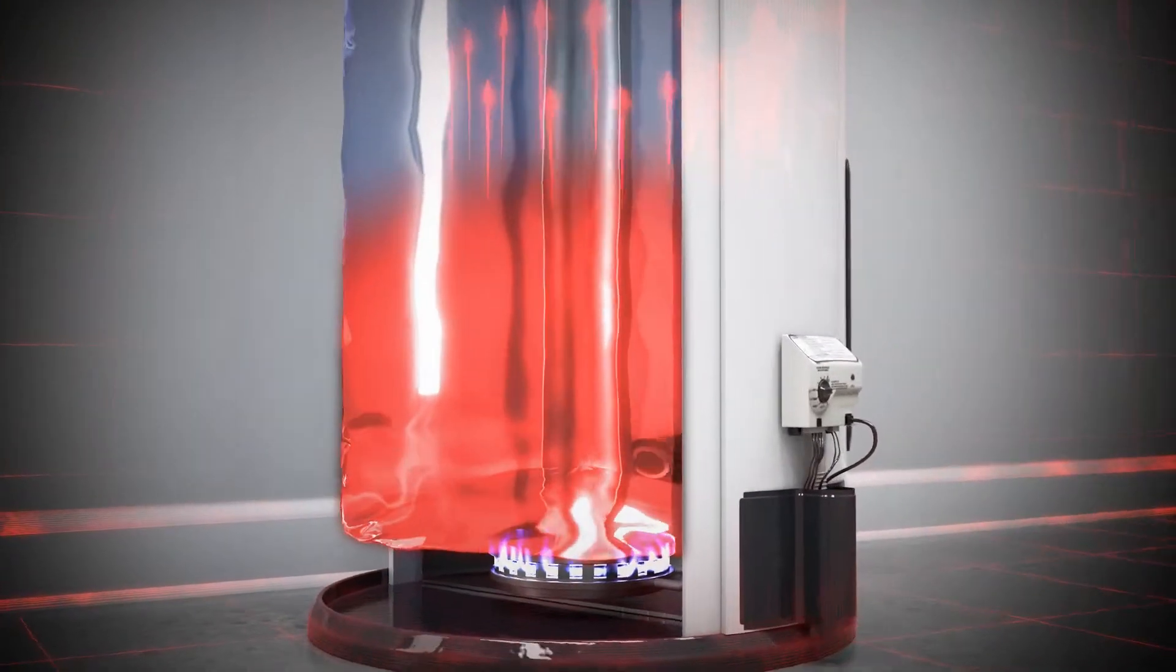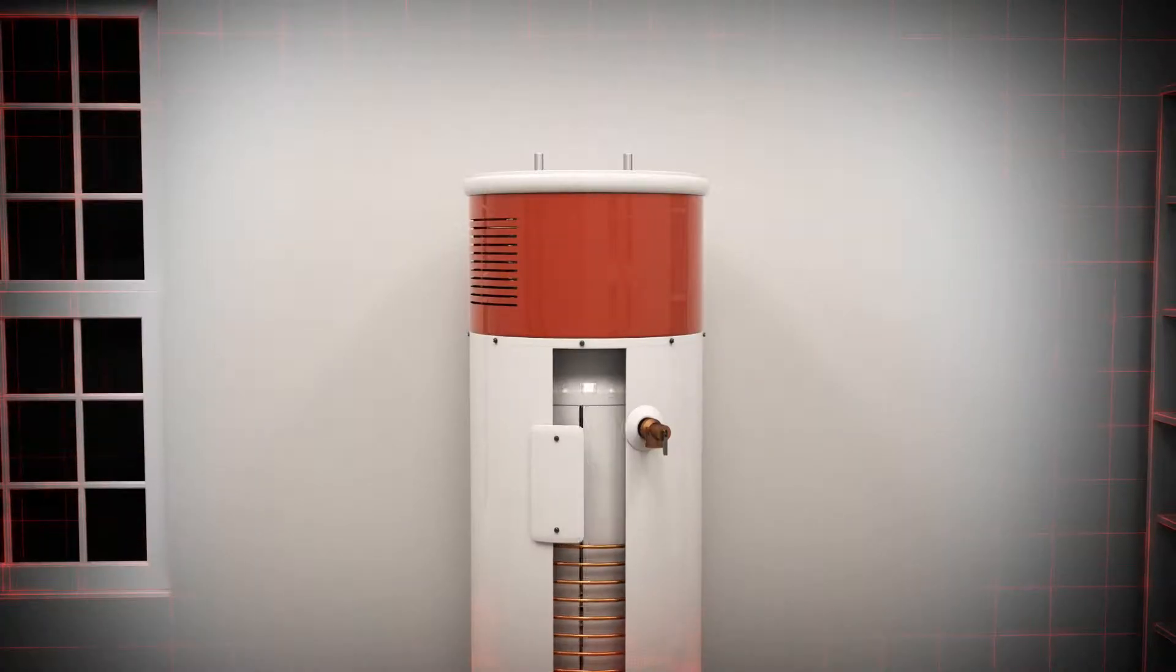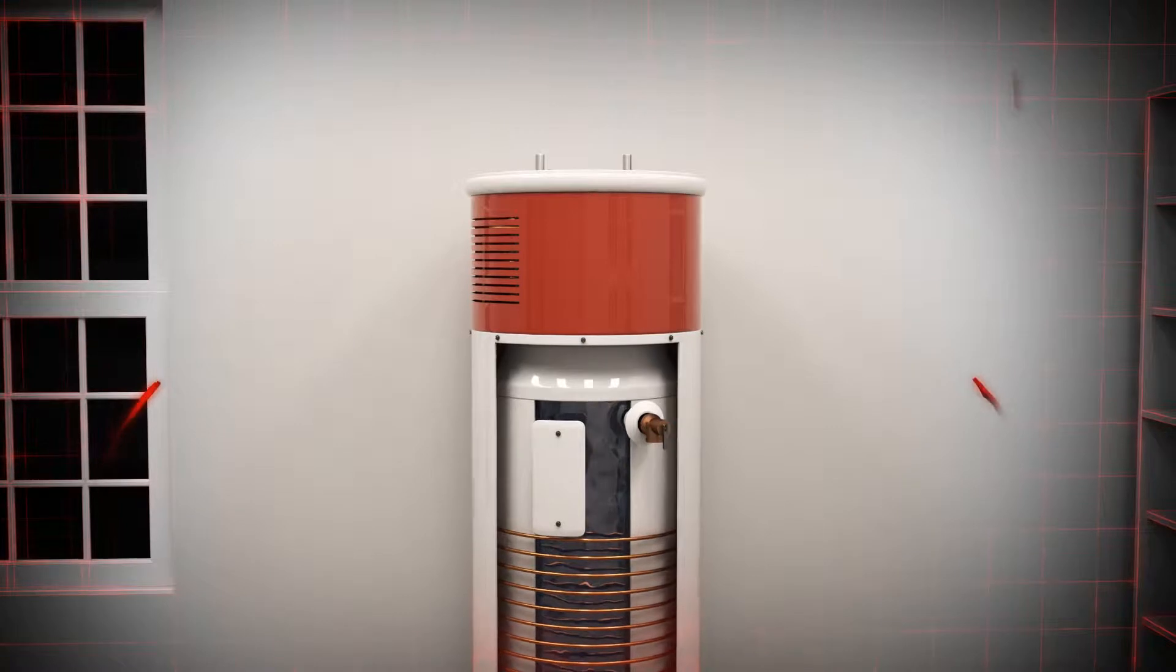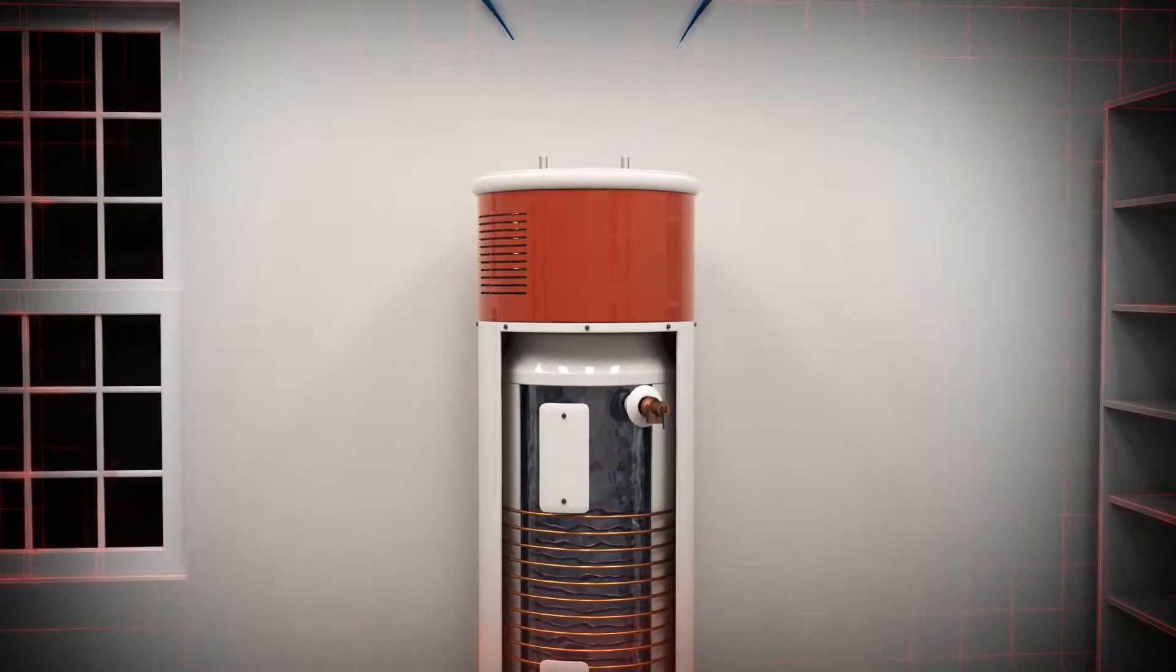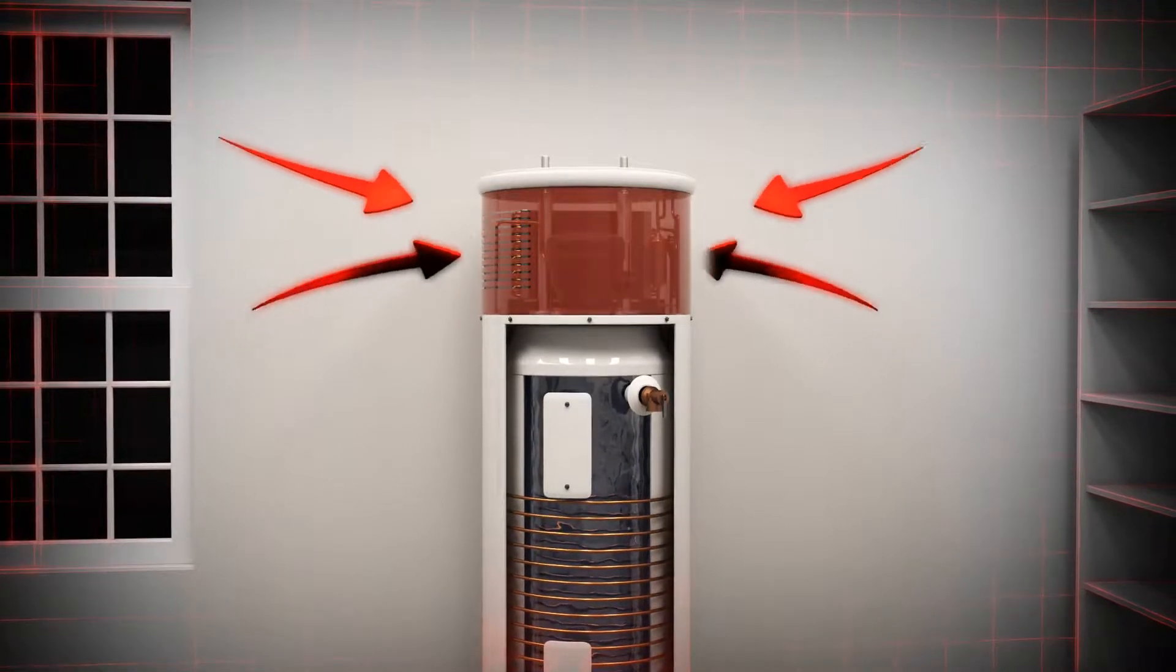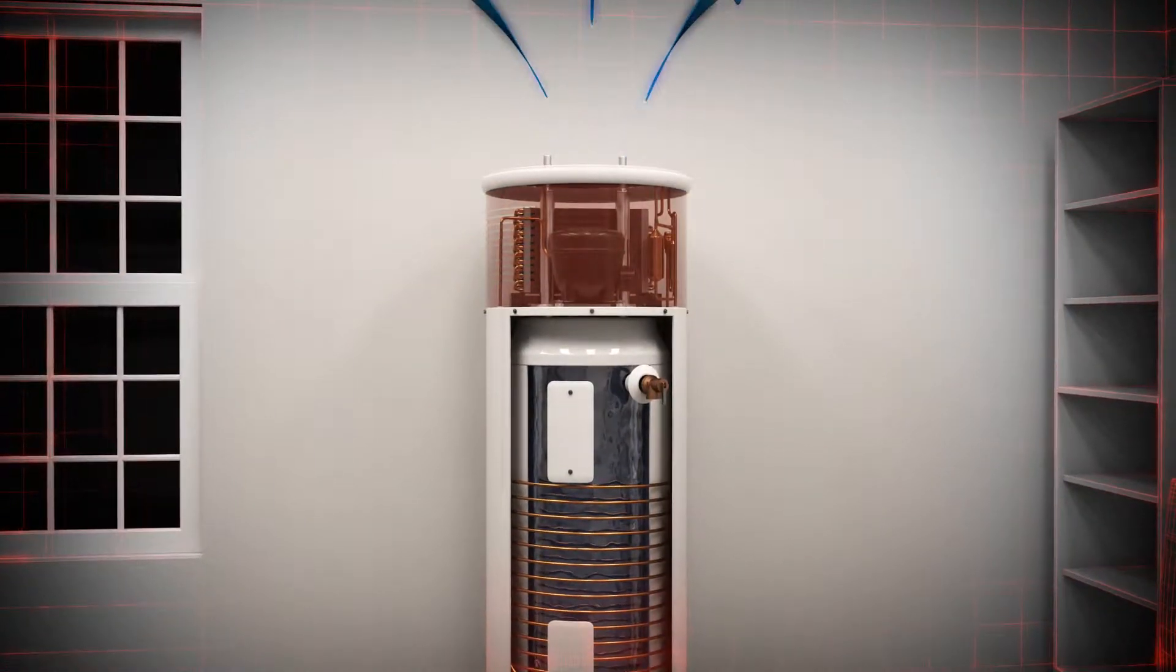A heat pump water heater, on the other hand, draws in ambient heat from the surrounding air. Heat in the air is absorbed by refrigerant inside the evaporator coil, and cool dehumidified air is exhausted.